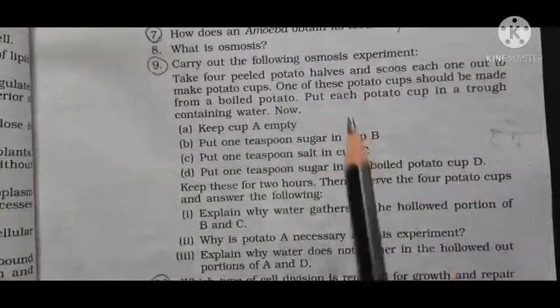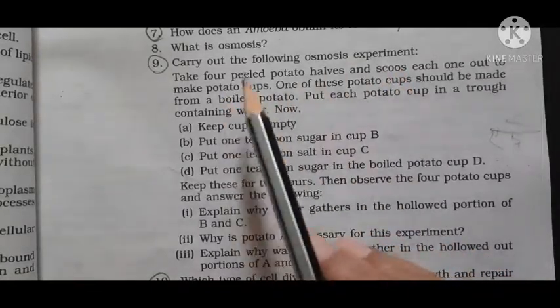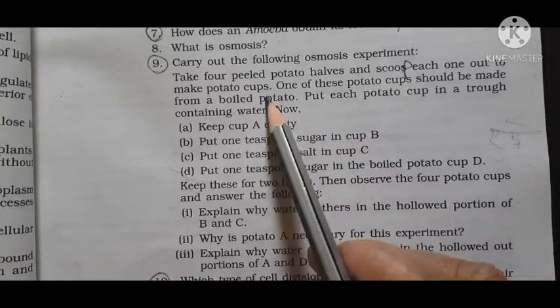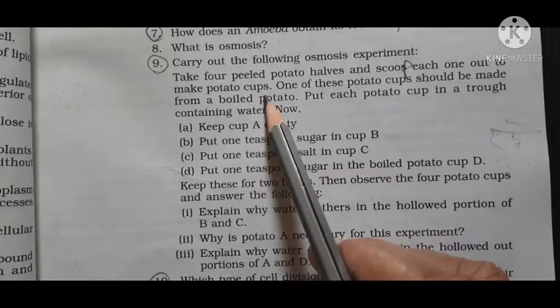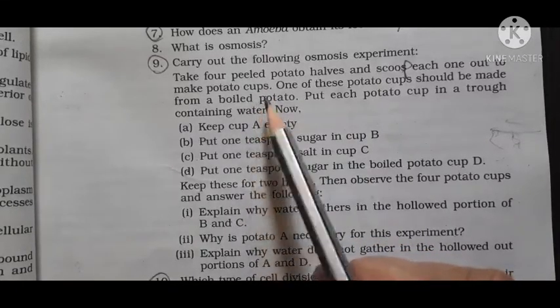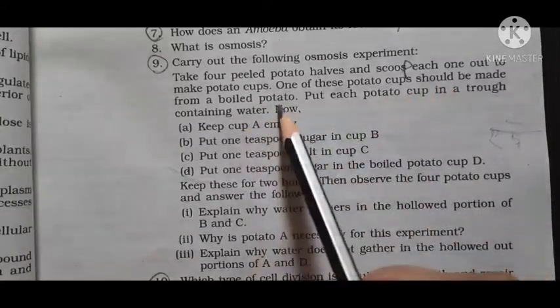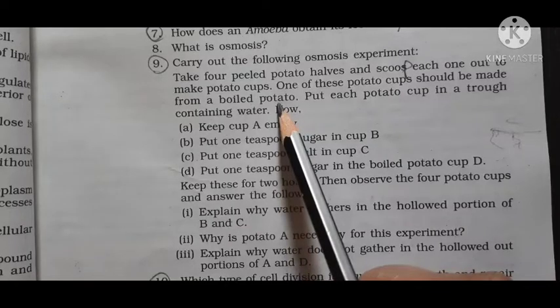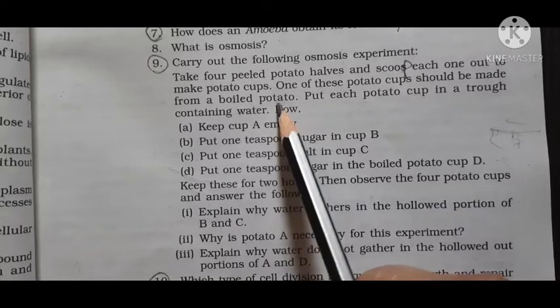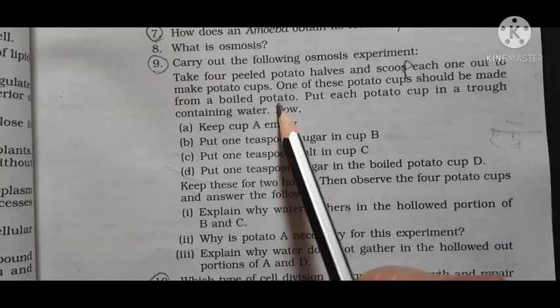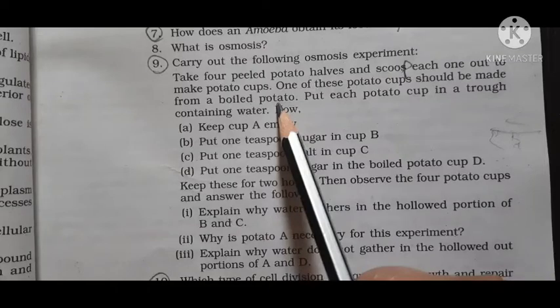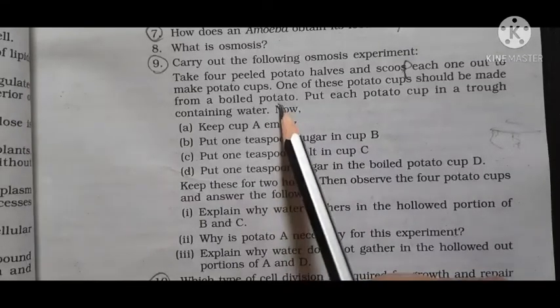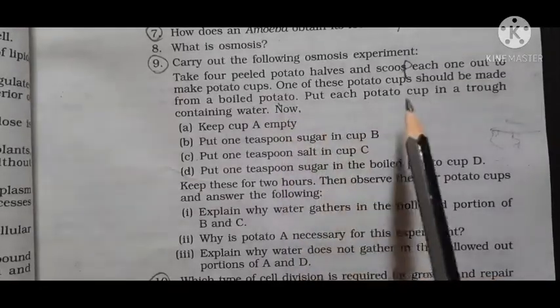Now question number nine: carry out the following osmosis experiment. Take four peeled potato halves and scoop each one out to make potato cups. Four peeled potato halves you have to take, that means two potatoes you have to take and you have to cut it into halves. So you will get four potato halves. Now one of these potato cups should be made from boiled potato. So one should be made of boiled potato. So in that case you have to take three potatoes. Boil one potato, cut it into two halves. Take half portion of the boiled potato and cut the remaining two potatoes which are unboiled into two halves. Both the potatoes cut into halves and you will get four halves. So three halves you take from unboiled potato and one you take from boiled potato.